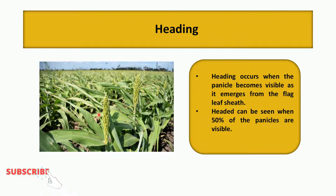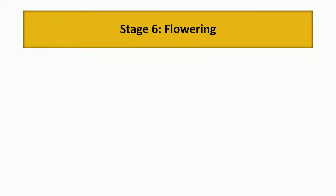At the heading stage, nutrient accumulation is approximately 60 to 70 percent of nitrogen, 60 percent of phosphorus, and greater than 80 percent of potassium is required.